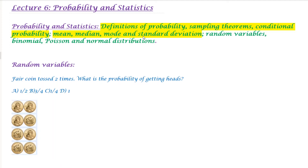Now we will talk about random variables. For example, we can relate to a random variable using a fair coin. We will talk about getting heads as the probability, but we don't know how many heads we will get. We will talk about the number of heads.